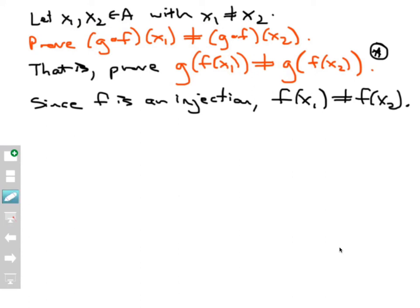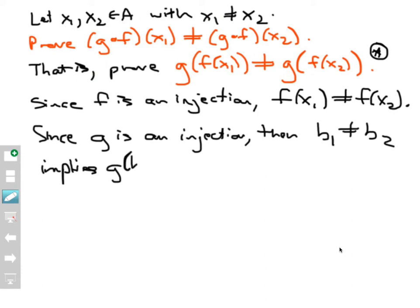Now I know something about g as well, and I'm going to say it in sort of general terms here. Since g is also an injection, if g is an injection, then generally speaking, b1 not equal to b2 implies that g of b1 is not equal to g of b2. And this is for all b1 and b2 in the domain of g.